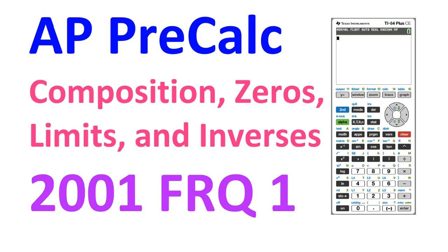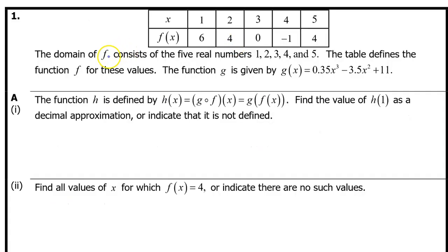Let's pretend it's from the 2001 AP Precalculus exam. The domain of F consists of the five real numbers 1, 2, 3, 4, and 5. The table defines function f for these values. The function g is given by g of x equals 0.35x to the third power minus 3.5x squared plus 11.